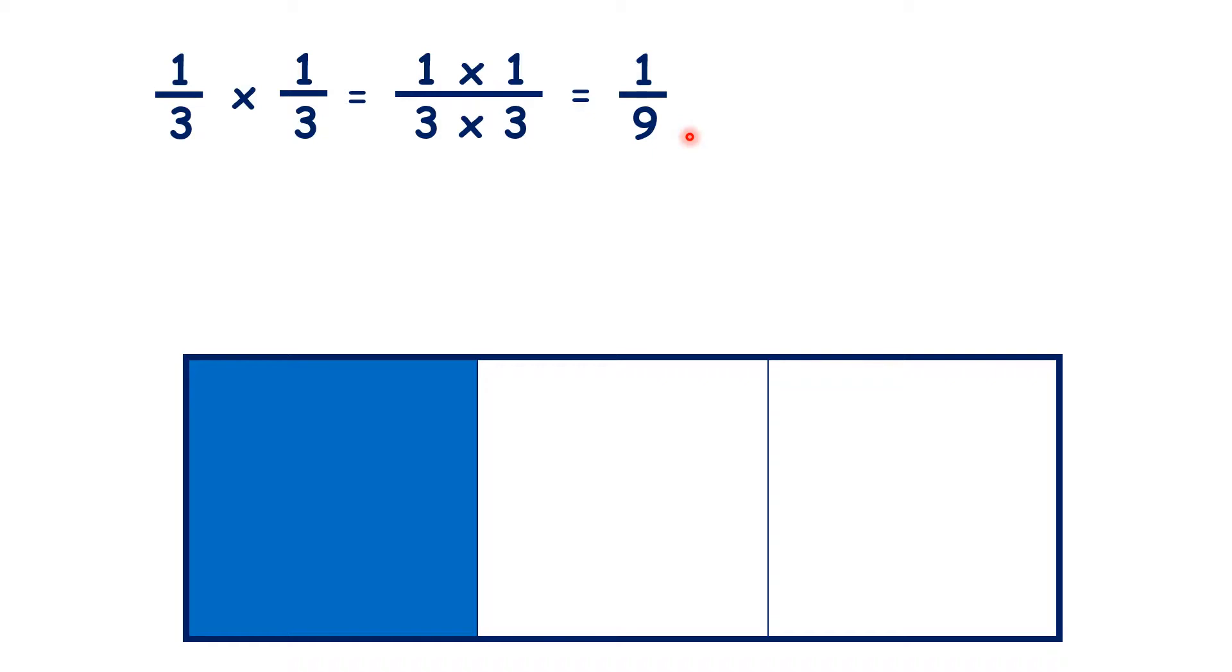And the reason why we do that is because with fractions, times and of mean the same thing. So if we have 1 third times 1 third, we're really finding 1 third of 1 third. So that's 1 ninth.